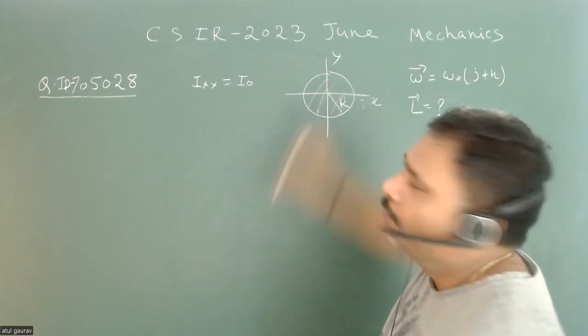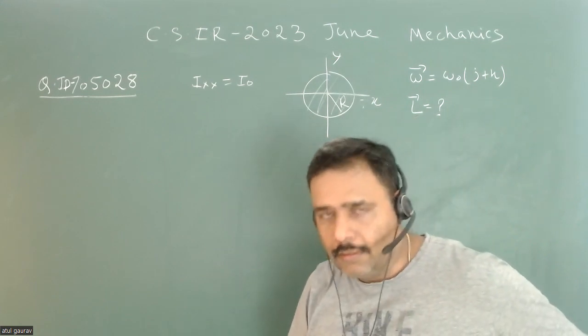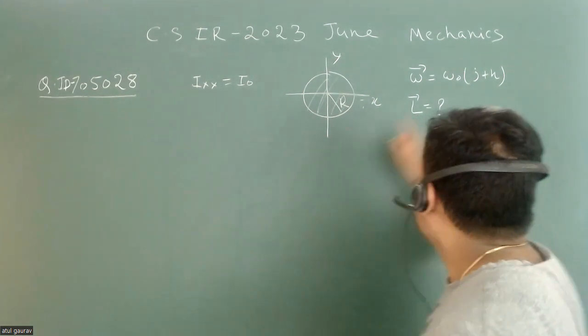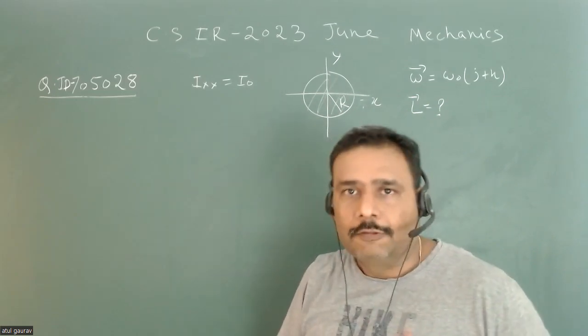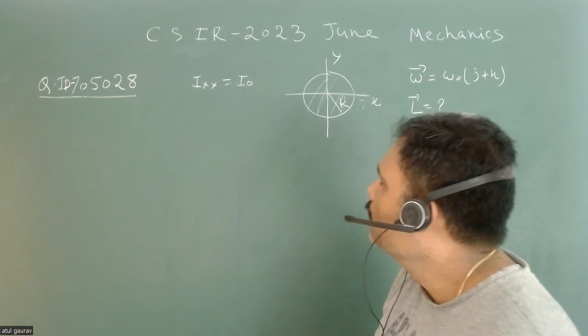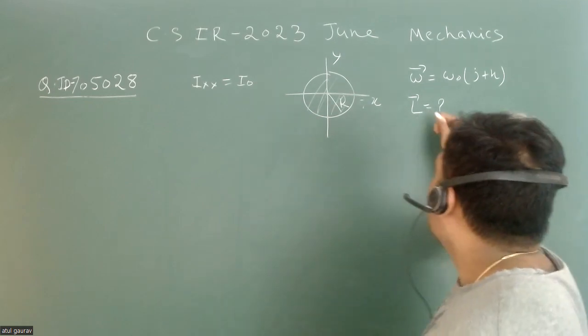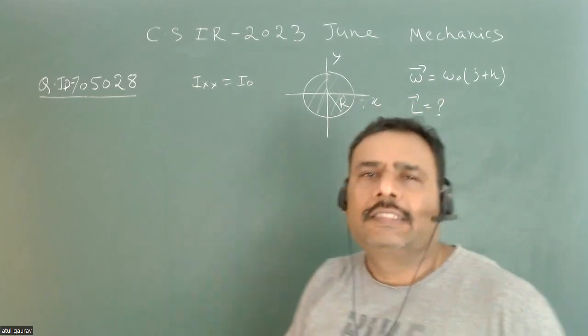This particular angular velocity is not along any principal axis, which is very interesting. We have to calculate the vector or direction of the angular momentum vector.